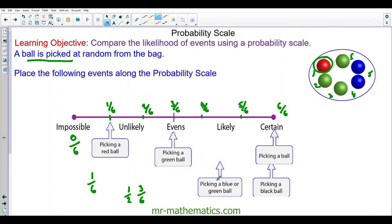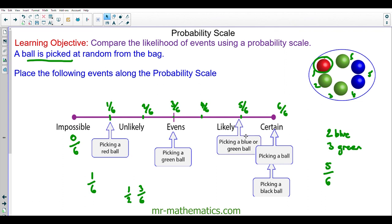Picking a blue or a green ball. Well, there are two blue and three green. So there are five in total out of the six that are possible. So that would be five-sixths, and that would move to here.